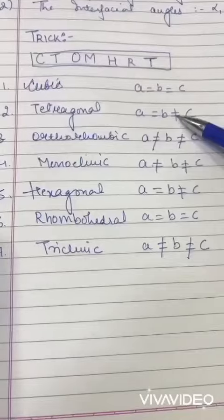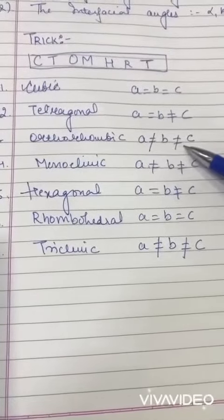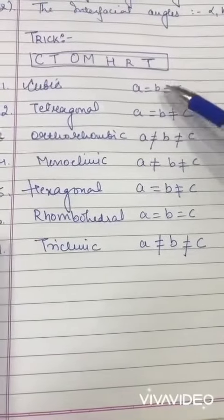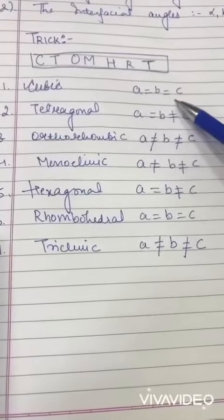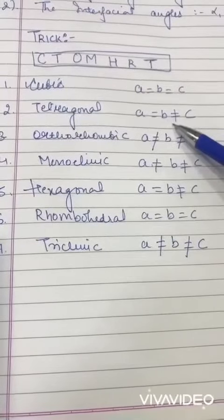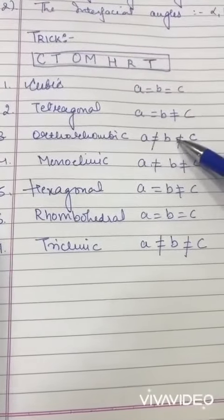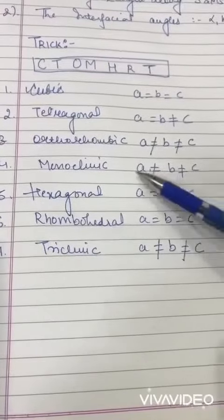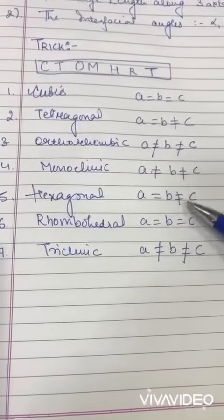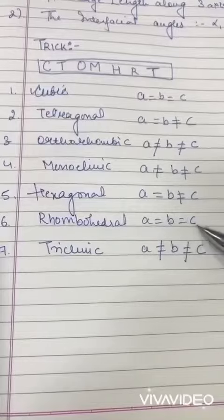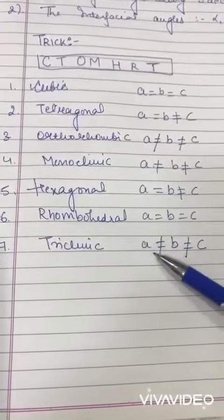One, two, three - what you have to do: first two are equal, then one is not equal, then both are not equal. Then reverse process: all three are not equal, last two are equal, all three equal. And triclinic again repeats: all three are not equal. So this is a very easy trick for the axial distance.